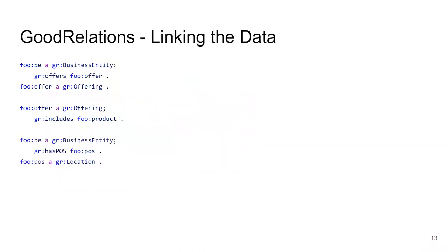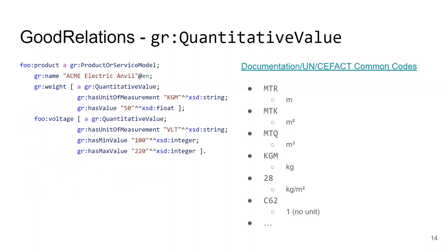To connect all the core classes into a complete dataset describing an e-shop: a business entity uses the gr:offers predicate connecting to offerings. The offering has a product which is a ProductOrService. The business entity also has a point-of-sales (pos) predicate pointing to a location. So we have business entity pointing to offerings and point-of-sales locations, with offerings including products.